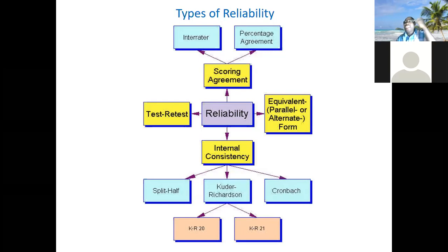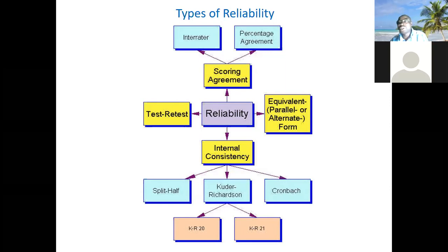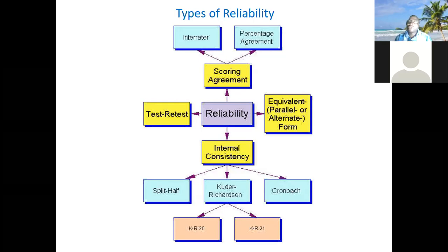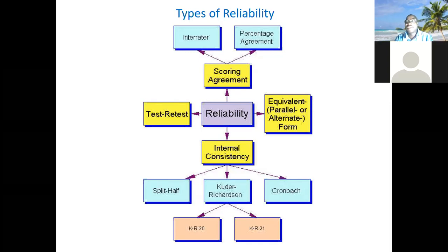That is test-retest reliability. If the instrument is not a questionnaire — maybe a rapid diagnostic test — you still compare results before and after for the same set of people, within an interval short enough that what you are measuring hasn't changed. That's test-retest reliability. And it's very simple — we're going to see an example.